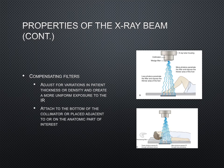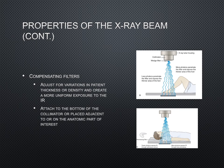Compensating filters, as their name implies, are used to adjust or compensate for variations in patient thickness or density and create a more uniform exposure to the IR. Many compensating filter designs are wedge-shaped — the thin portion of the wedge is placed over the thicker anatomic part and the thick part of the wedge is placed over the thinner anatomic part. These filters may attach to the bottom of the collimator or be placed adjacent to or on the anatomic part of interest. Picture A shows the wedge filter attached to the bottom of the collimator, and picture B shows the boomerang filter underneath the patient's shoulder. The use of compensating filters requires an increase in mAs to maintain the overall exposure to the IR — a trade-off of slightly increasing patient dose to improve image quality.